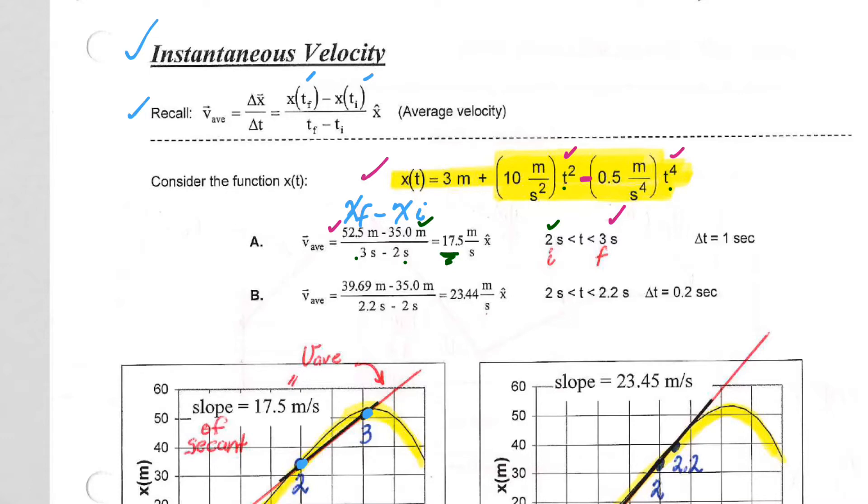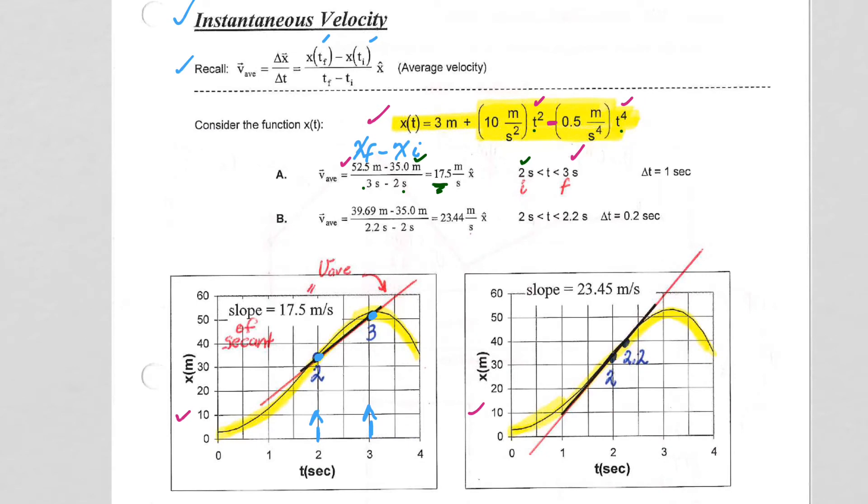What if we go, as it shows here, instead of from 2 to 3, 2 to 2.2. When we do final 2.2, initial 2, we do x-final minus x-initial, 39.69 minus 35 divided by 2.2 minus 2 gives us 23.4.